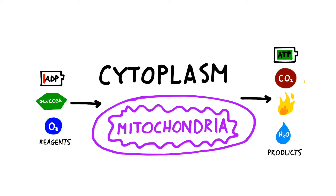Now let's look at the process of respiration a little bit more closely. Cellular respiration is going to occur in both the cytoplasm and inside an organelle called the mitochondria. Notice again that we're taking the reagents of glucose, oxygen, and an uncharged molecule of ADP and using it to create carbon dioxide, a little bit of heat, some water, and a recharged molecule of ATP.